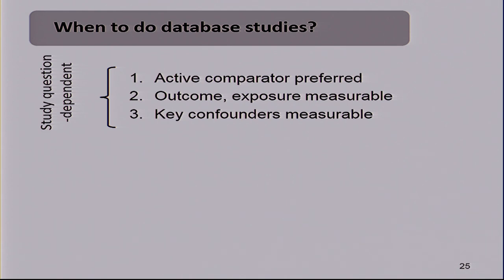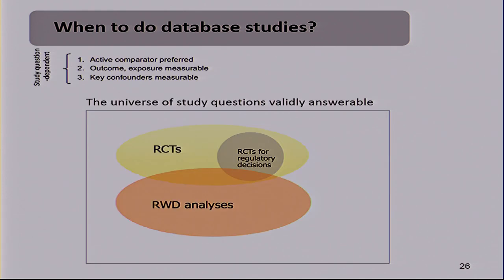You need to have some confidence that the key confounding variables — the key risk factors for the outcomes — are measured in your system. This is kind of my Venn diagram attempt where each bubble is the universe of study questions that can be validly answered. With RCTs, you have a bubble. With real-world data analysis, you have a bubble. And there's a middle region where RCTs for regulatory decision-making overlap with the real-world data bubble. If we can identify that group of questions relevant for decision-makers that we feel confident we can answer without randomization — even if that's only 10% — we have a winner.